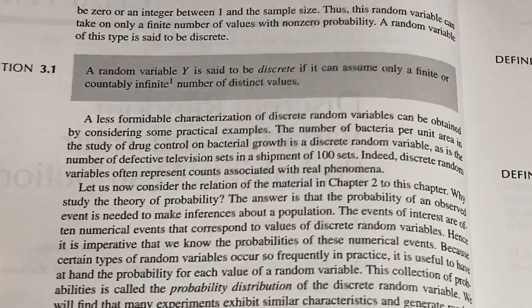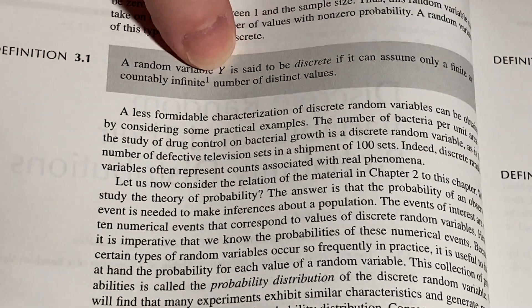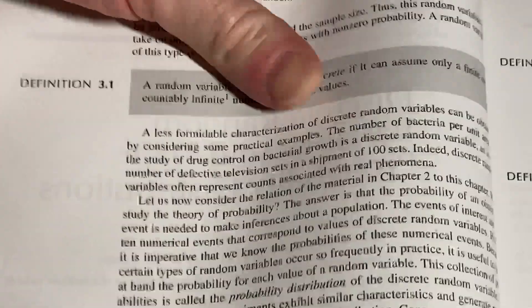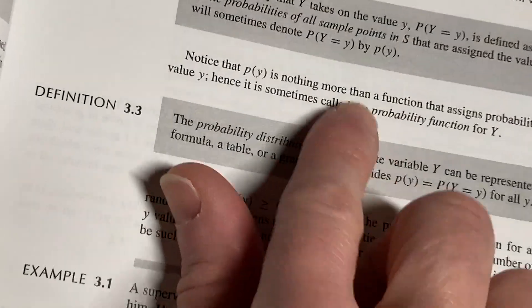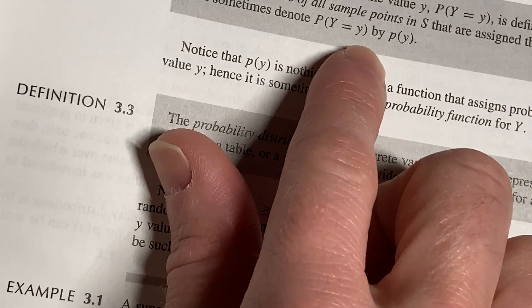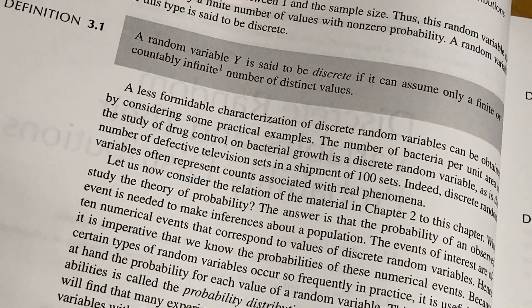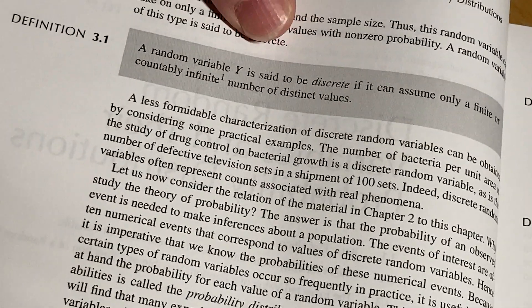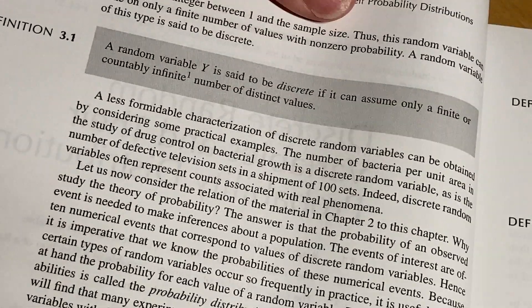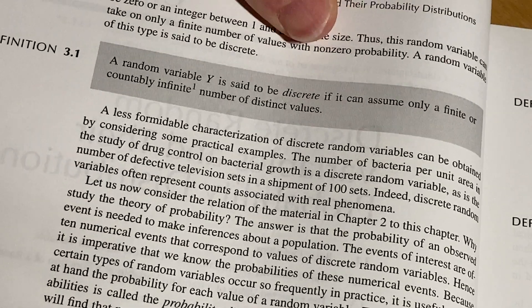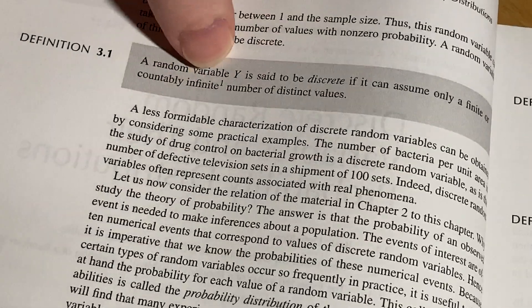A random variable Y. Notice they use capital letters for the random variables. And they tend to use lowercase letters for the value you're assigning to it. So like here. See how it says P of Y equals little y. So little y is the value being assigned to the random variable big Y. Okay. Let's go back to this definition.